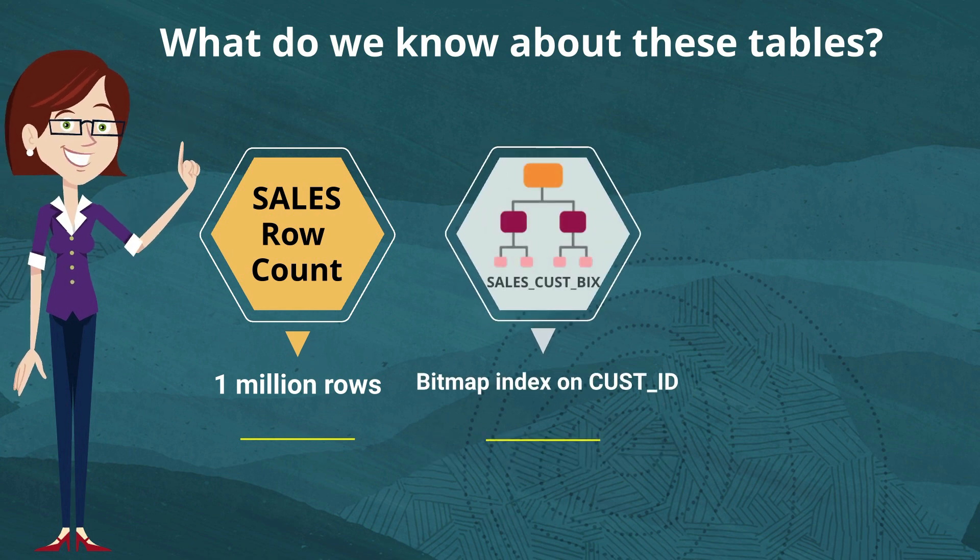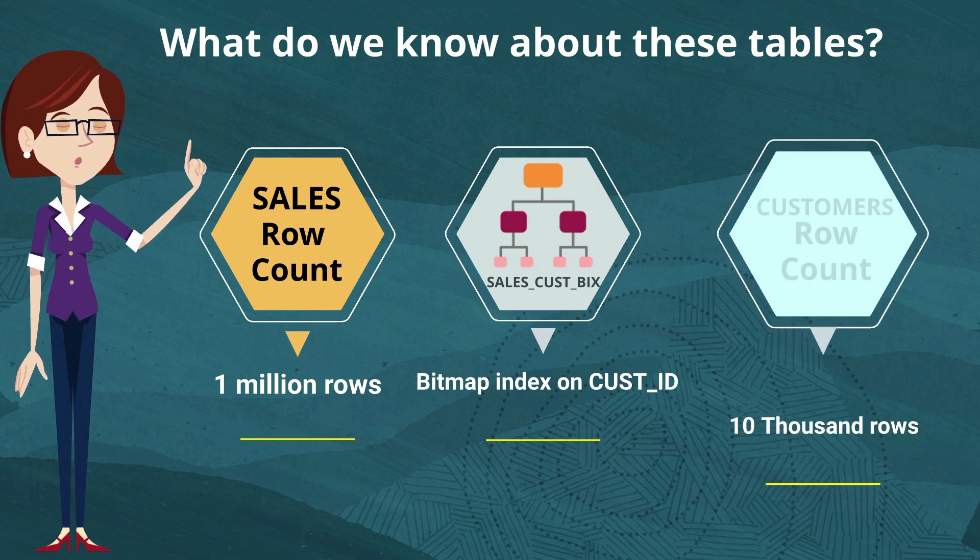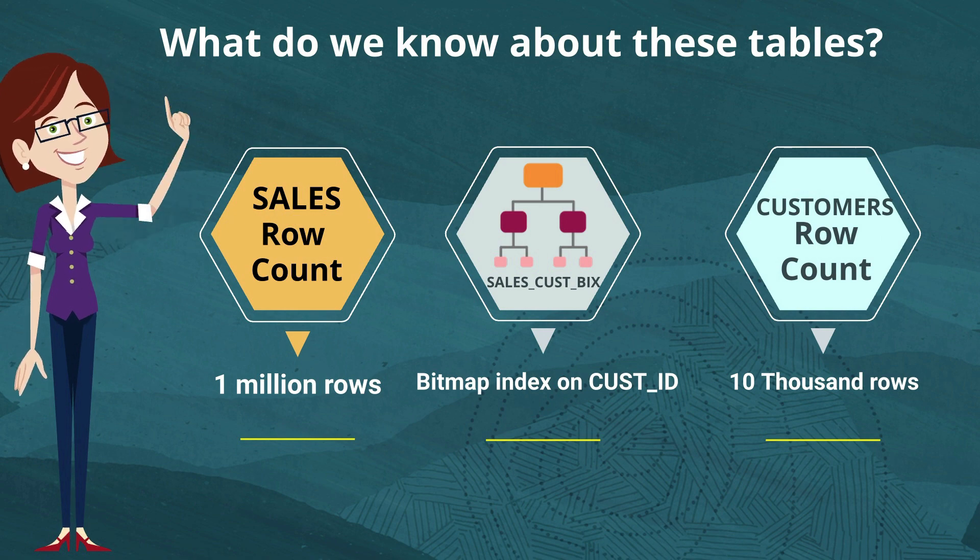On top of the sales table, we have an index that's being used called sales cost bix, which is a bitmap index on the customer ID. And then the second table in the query, the customers table has a row count of 10,000. So these are not small tables. So why aren't we getting the hash join that we're expecting?